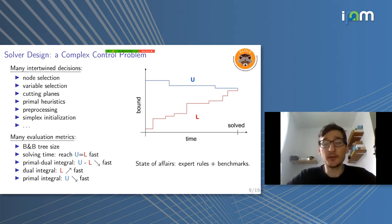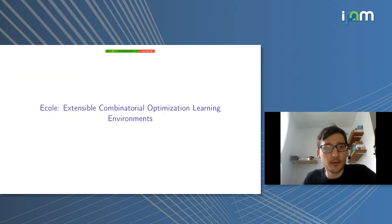The state of affairs in existing commercial solvers is basically expert rules and benchmarks. People try to be clever and try to design good rules, which make sense and which should be good. And then they just evaluate those on some benchmarks, some internal benchmarks, which is usually their property. They will not share their benchmark. And they decide on, this is the best set of rules to solve my benchmarks on average. So it's very, very empirical.